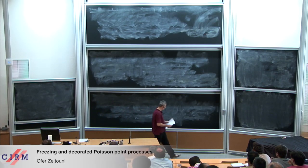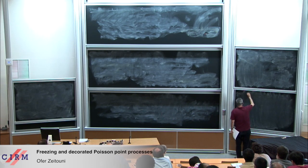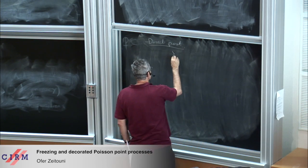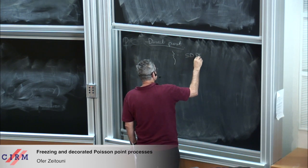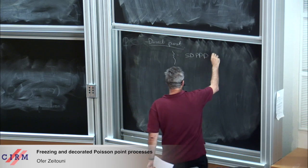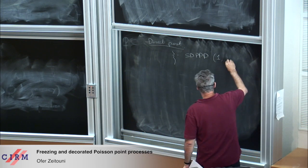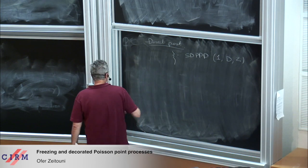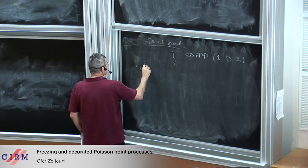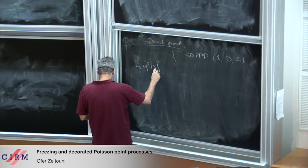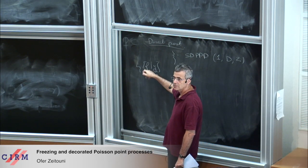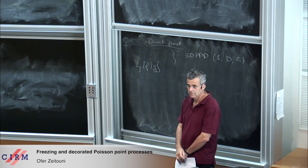The direct part of the theorem: if you have ξ which is SDPPP with parameters c = 1, D, and Z — it's just a rescaling — then L_ξ(F) gives the same function regardless of what F you take, up to a shift. That is what I want to show. So L_ξ(y)(F) is the expected value of e^{− Σ_i f(ξ_i − y)}, where ξ_i are the points of the point process.